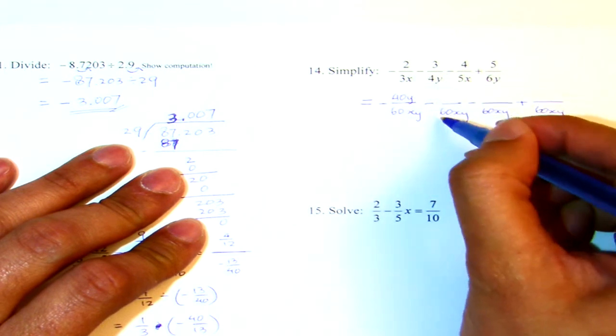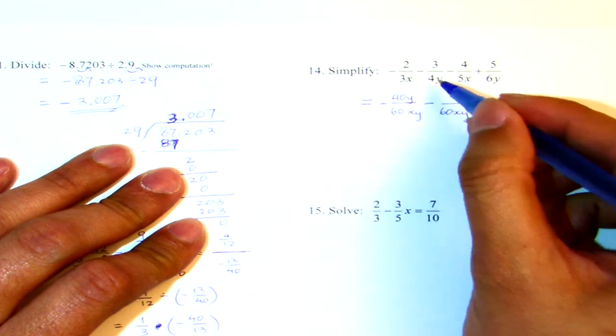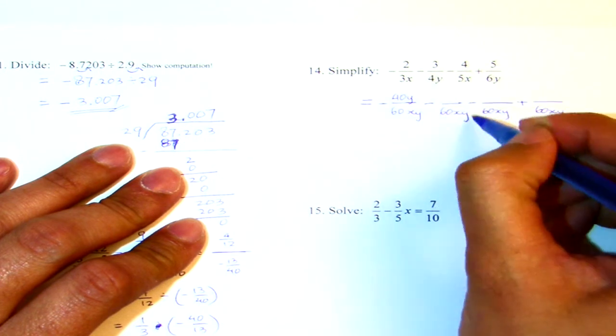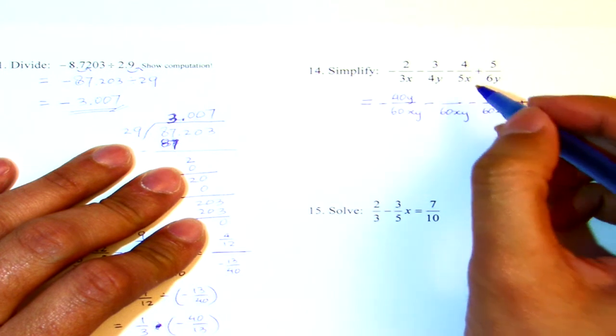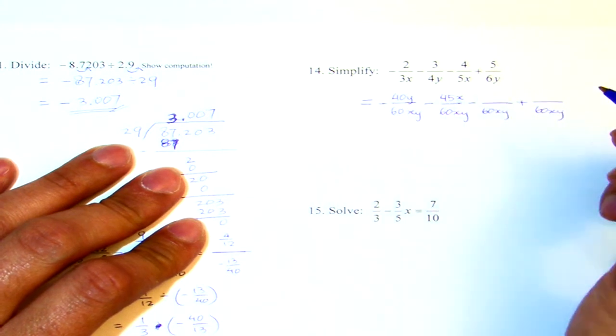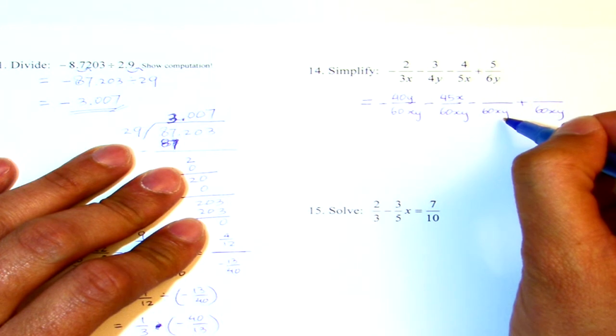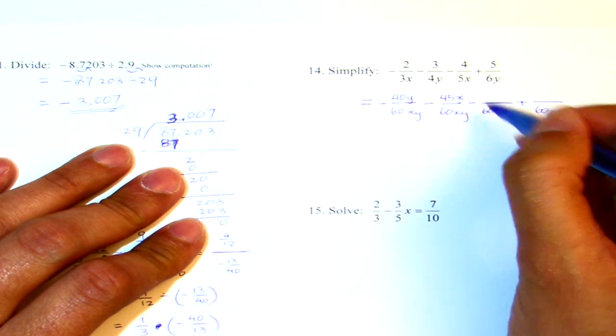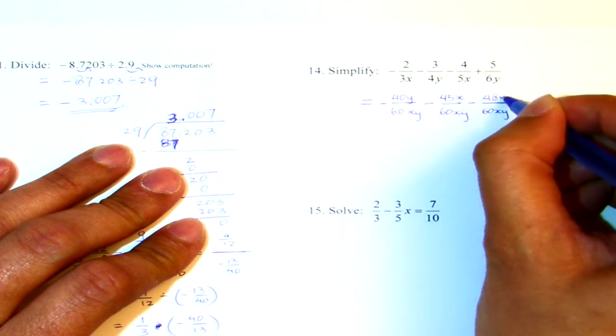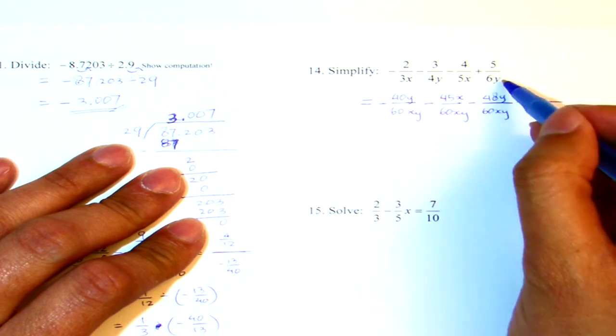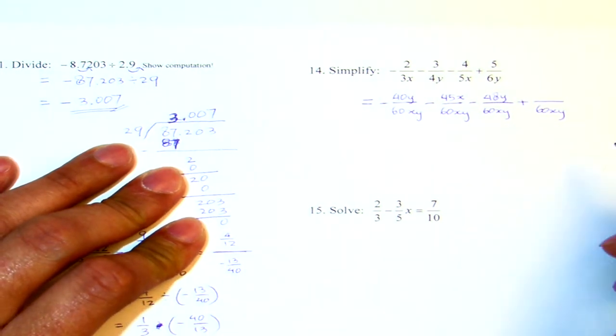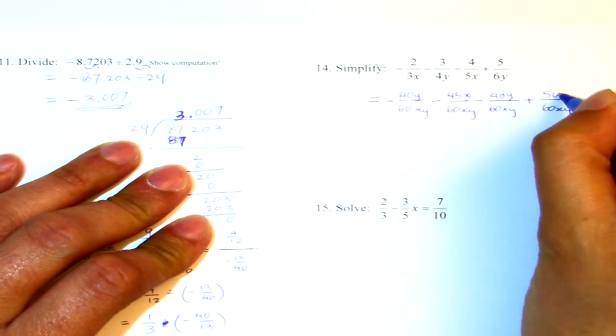4y times what gives me 60xy? 15x, right? So 4y times 15x gives me 60xy. On the top, I multiply by 15x gives me 45x. 5x multiplied by what gives me 60xy by 12y. So on the top, if I multiply by 12y, I will get 48y. And finally, the last fraction, 6y times what gives me 60xy. That will be 10x. So on the top, I multiply by 10x, I get 50x.